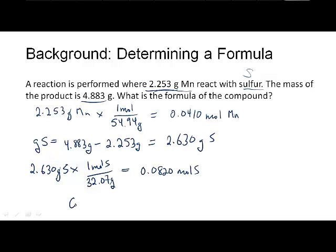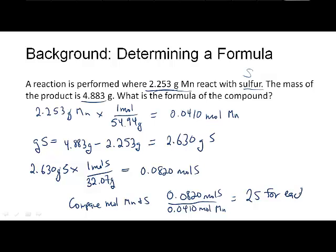Then we compare moles of manganese and sulfur. We have 0.0820 moles of sulfur for every 0.0410 moles of manganese, which means there's two sulfurs for each manganese. Therefore, the formula is MnS2.